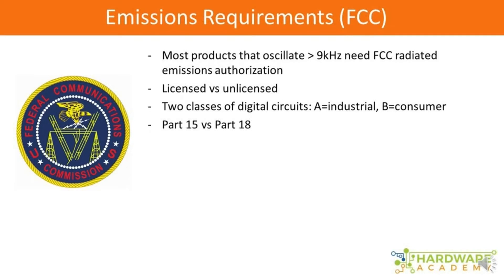Then we have Part 15 versus Part 18. This refers to the Code of Federal Regulations in the U.S. — a huge document with all federal regulations organized into sections. Section 47 is where most of this falls under, and there are different subsections or parts. Part 15 governs most of the products we'll be talking about. Part 18 is a special part of the code specifically for products that use radiofrequency RF energy to do some type of work — not just transmitting information, but actually doing work using that RF energy.